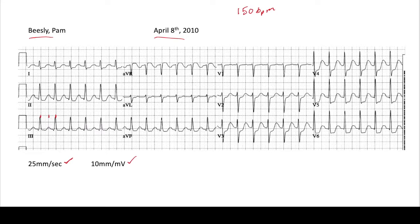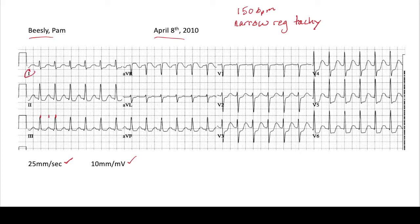Next, we determine the rhythm. We already noted that it's fast, so it's a tachycardia. Now, is the QRS narrow or wide? We see that it's narrow. So it's a narrow complex tachycardia. And is it beating regularly or irregularly? We see that the intervals are regular. So this is a narrow complex regular tachycardia. In the tachycardia lectures we'll talk about what these types can be, but right now we know this is a narrow regular complex tachycardia. So we have the rate, we have the rhythm. Next, let's look at axis.